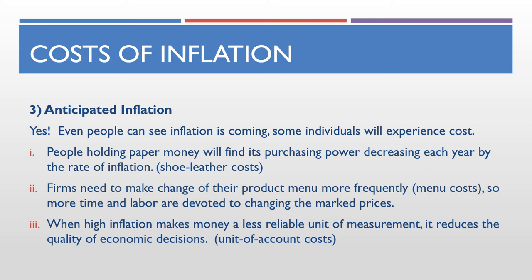Number two is what we call the menu cost. The menu cost usually refers to the social cost from the firm side — firms also incur a cost when facing inflation in future periods. When firms know that inflation is going to happen very frequently, it forces them to change their prices on the menu a lot more frequently than before, and they have to be constantly making adjustments to the wages of labor and prices, which poses a social cost to the firm to run the business.